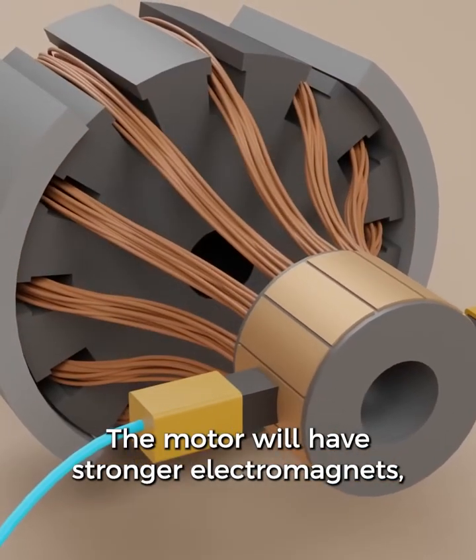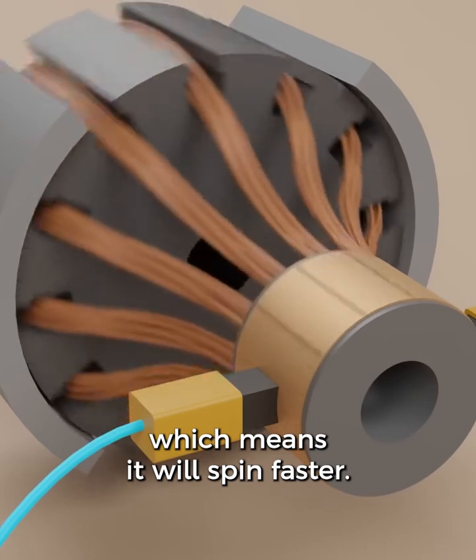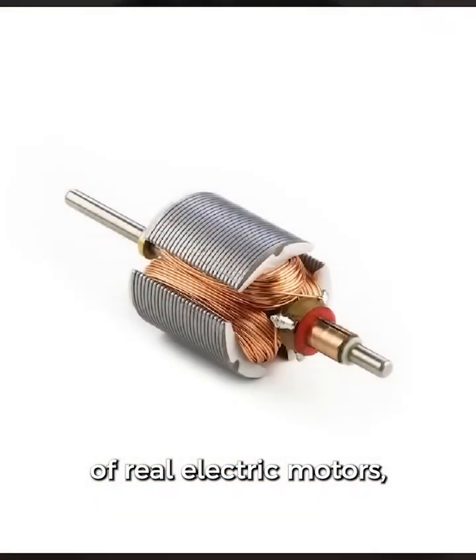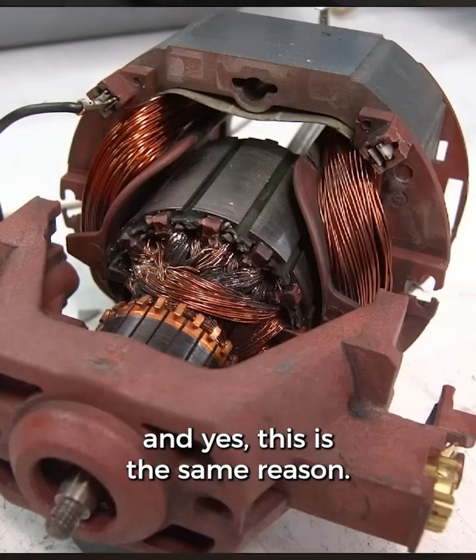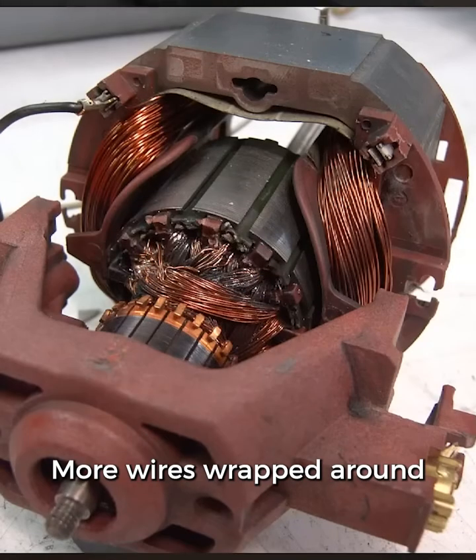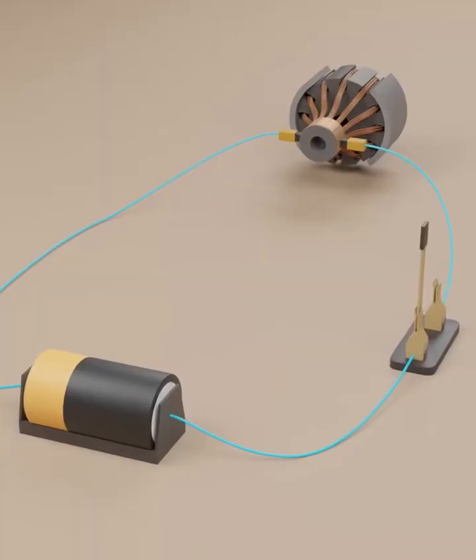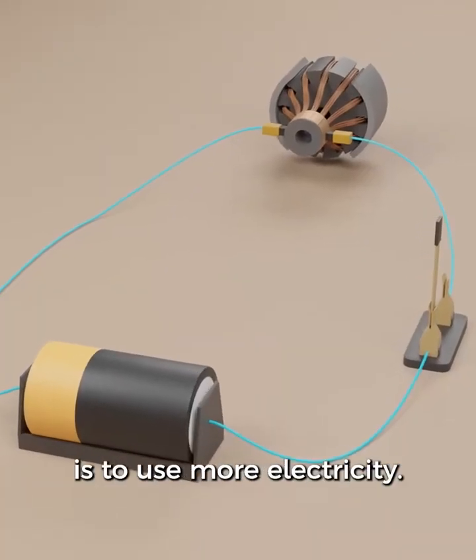The motor will have stronger electromagnets, which means it will spin faster. If you look at some pictures of real electric motors, you can see lots of wires wrapped around. And yes, this is the same reason. More wires wrapped around means stronger electromagnets. Another way to make this stronger is to use more electricity.